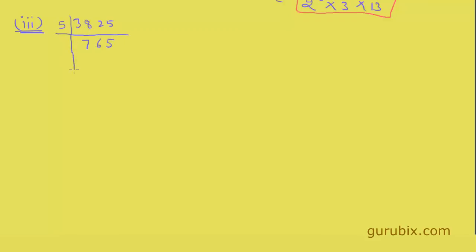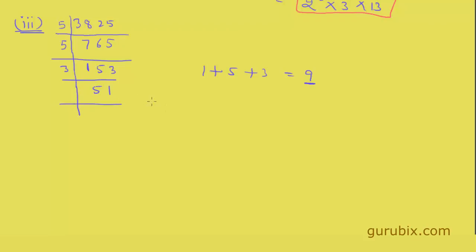We get 765 as quotient. Again the unit digit is 5, so it will be divided by 5, and we get 153 as quotient. We see that the sum of digits 1 + 5 + 3 = 9, and 9 is a multiple of 3, so 153 will be divided by 3. Again the sum of digits 5 + 1 = 6 is a multiple of 3, so 51 will also be divided by 3.